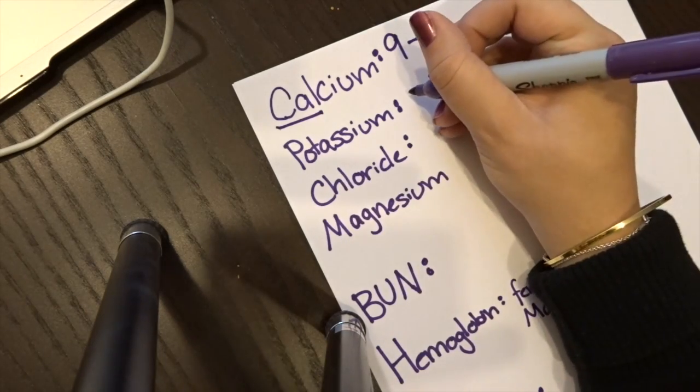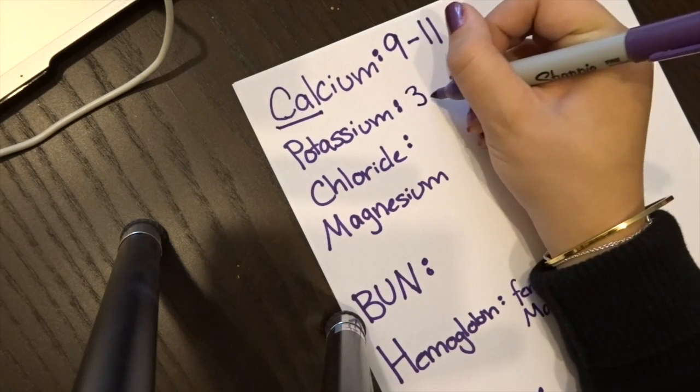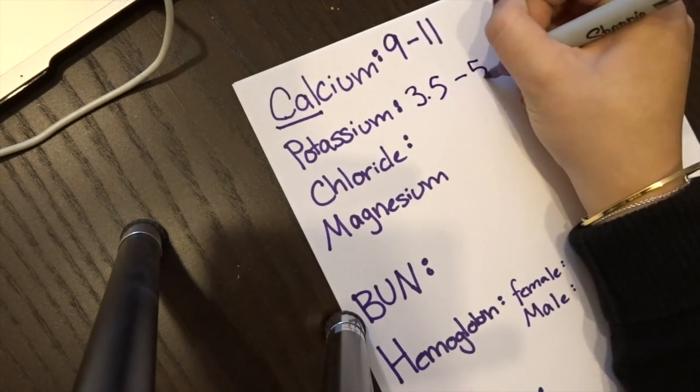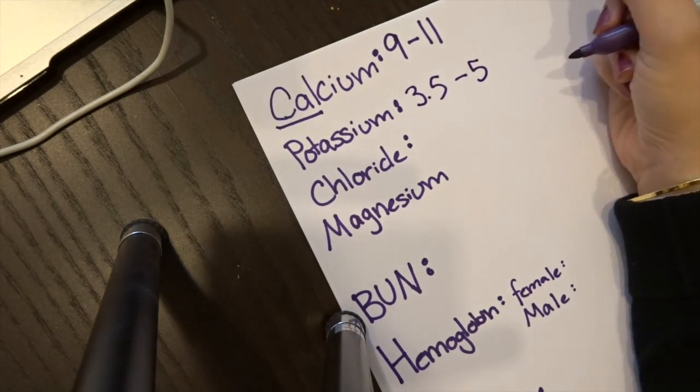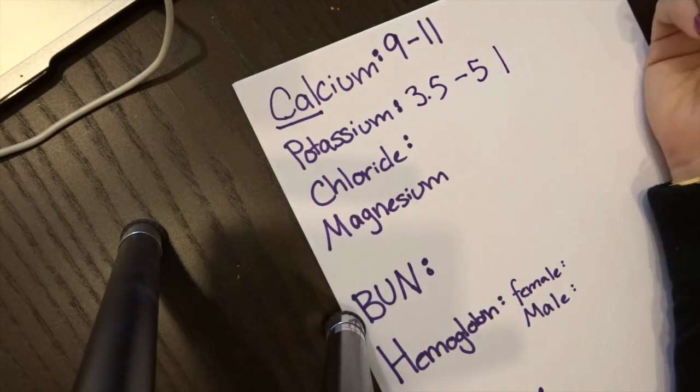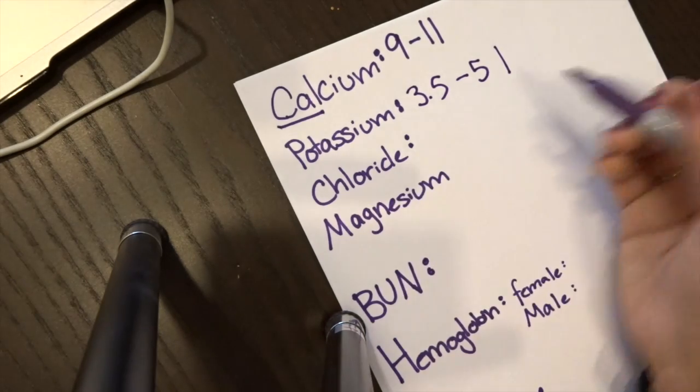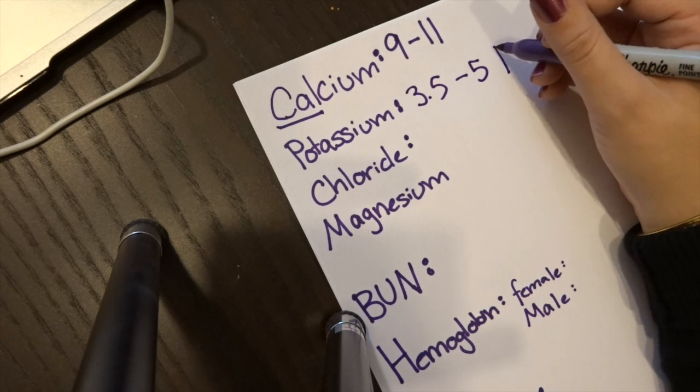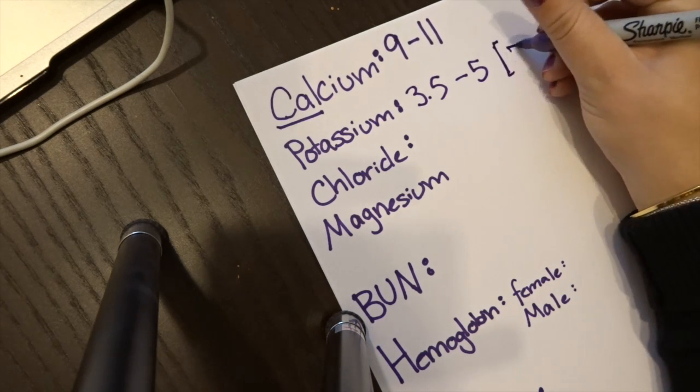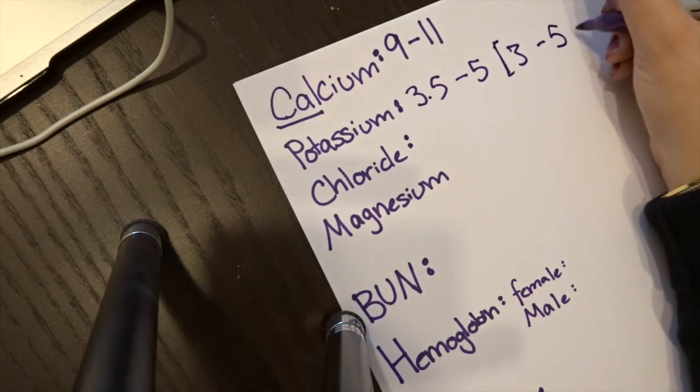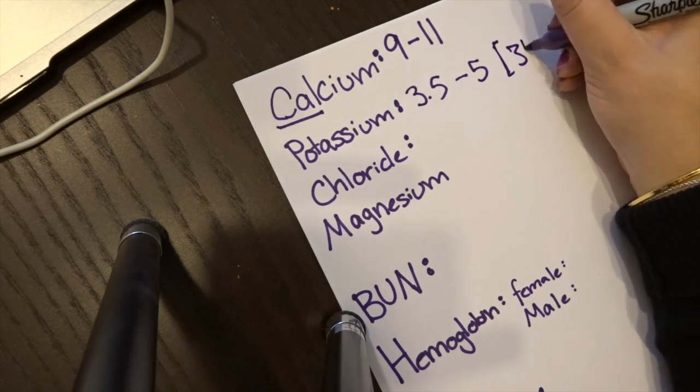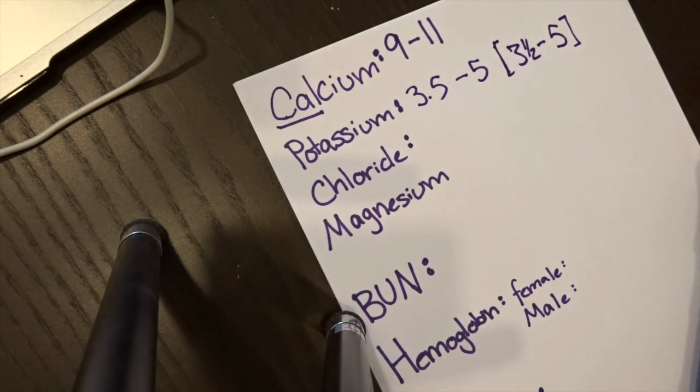Potassium is going to be 3.5 to 5. The way that I remember this is when you buy a bunch of bananas, which are high in potassium, the bunch usually contains 3 to 5 bananas. And you want to buy them half ripe so they don't go bad too fast. So 3.5 to 5.